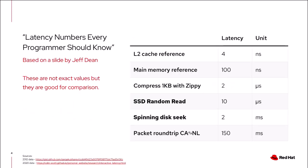In 2012, Jeff Dean published a slide called 'Latency Numbers Every Programmer Should Know,' which became very popular because it's really interesting to see how long different operations in computer systems take.